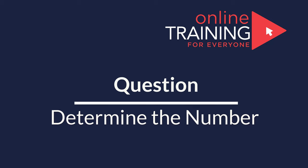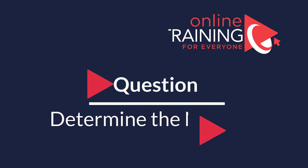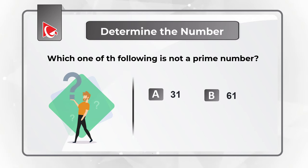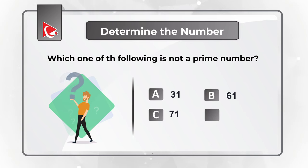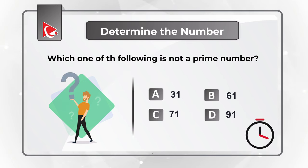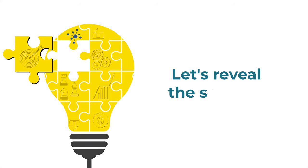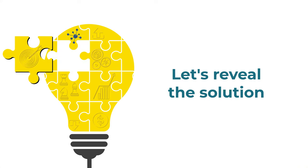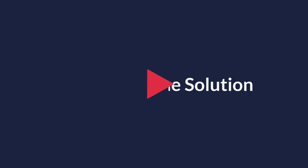Here's an interesting question where you're presented with a set of numbers and need to determine which one is not a prime number. Choices: A) 31, B) 61, C) 71, or D) 91. Recall the definition of prime numbers and see if you can find the solution.